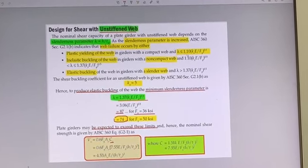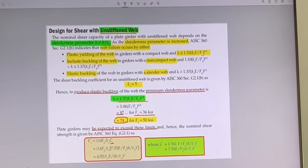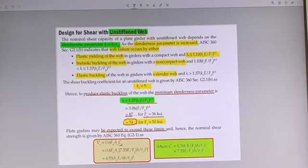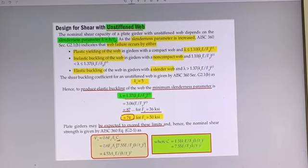Suppose if you substitute 1.10 sqrt(kv*E/fy), it becomes only 54. If the web slenderness is 54, it can produce plastic yielding of web.